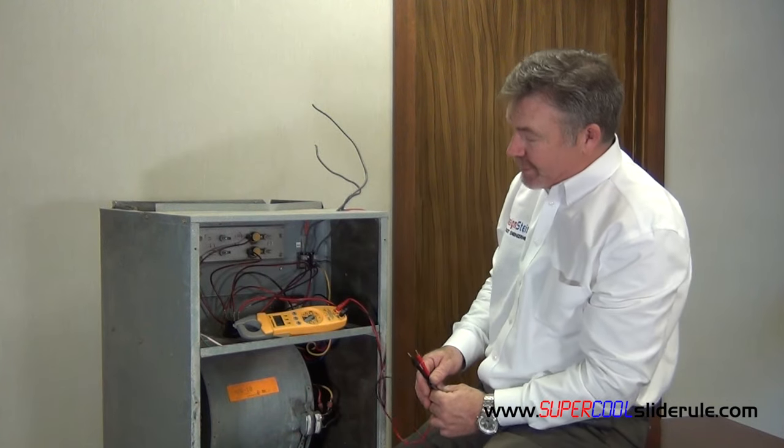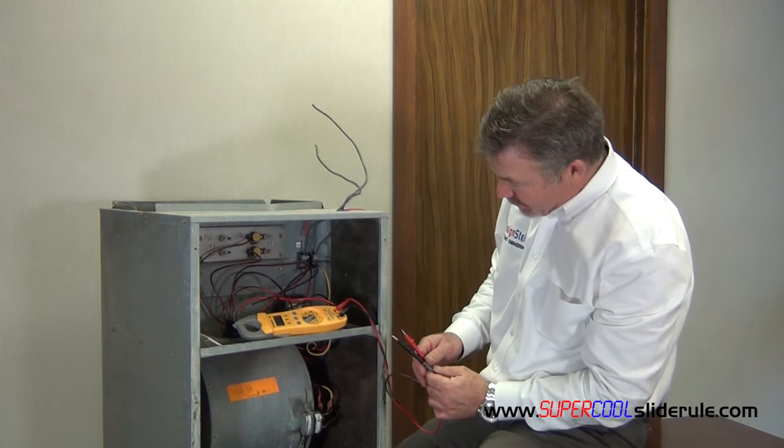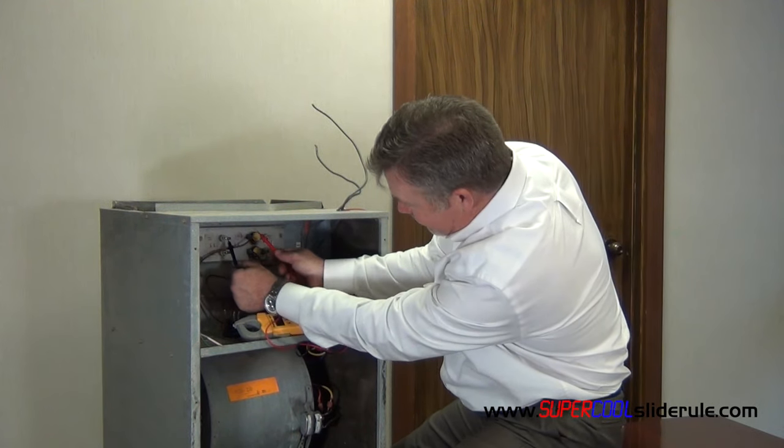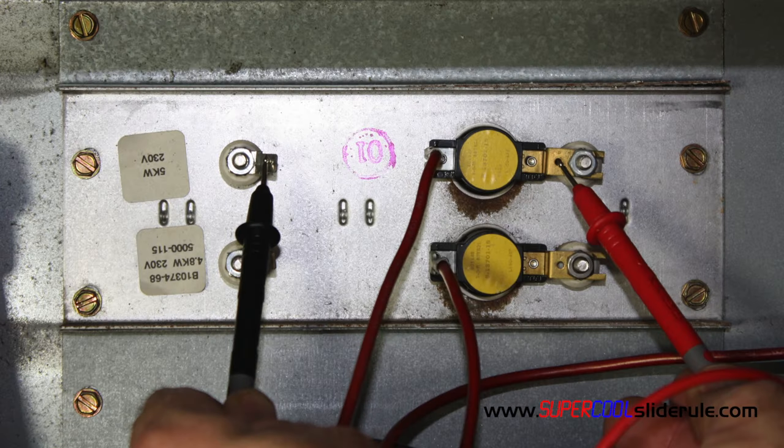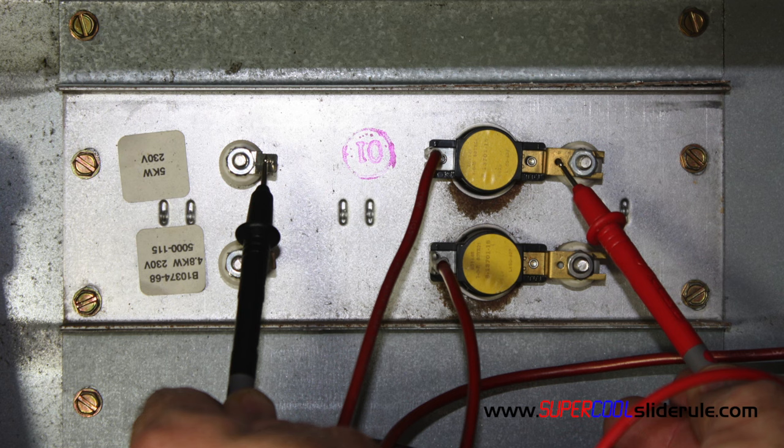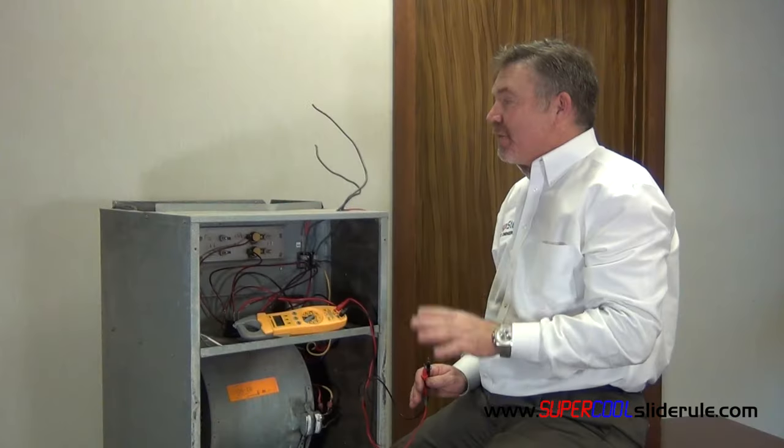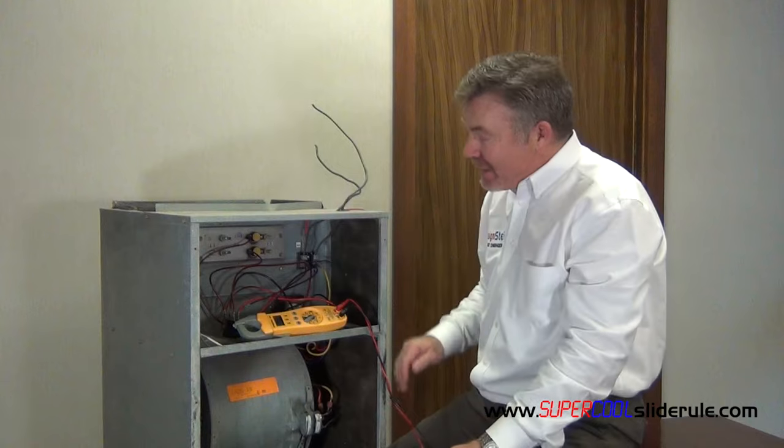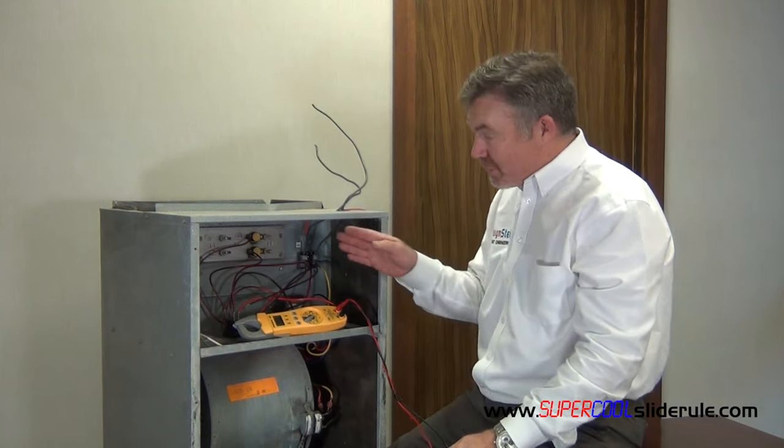So, if those were the readings, the next spot we would test would be, once again, all the way on the left side, and then right here where this bolt is on the right side, that will check the actual heating elements themselves. If we do have an OL condition, that will indicate that that heating element is burned out on that particular circuit.